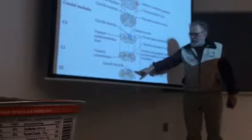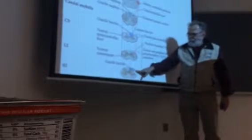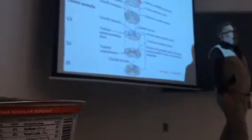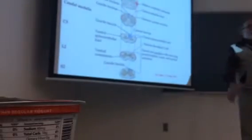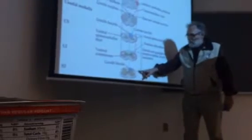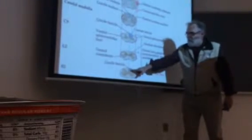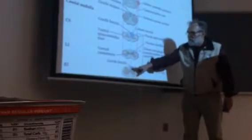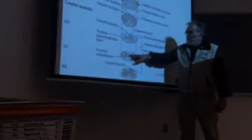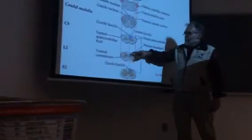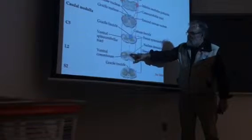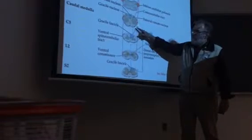It's a dorsal root ganglion. Therefore, what type is this? It's a sensory tract fiber. This neuron comes into the gracile fasciculus and ascends. Signal comes in, and we can tie in here and ascend.